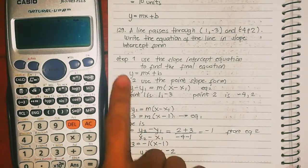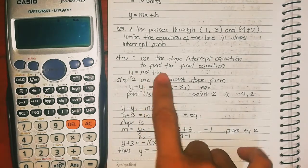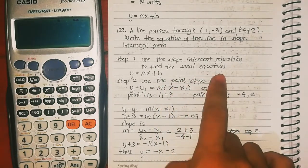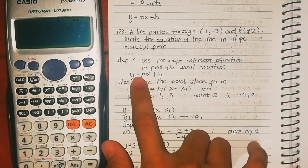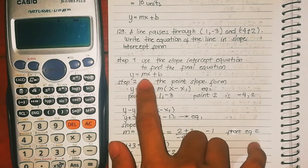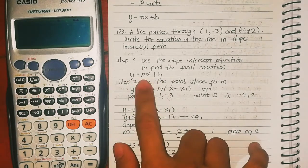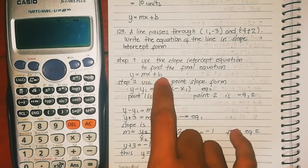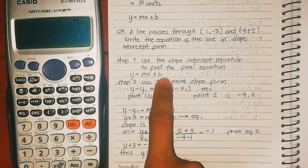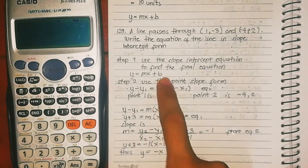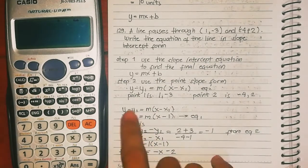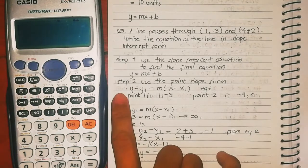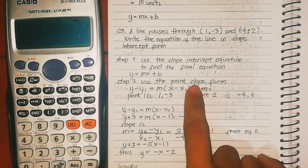Step 1: use the slope-intercept equation to find the final equation. We are looking for this equation in the form y = mx + b, where m is the slope and b is the y-intercept.